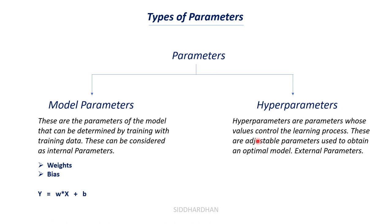Hyperparameters are parameters whose values control the learning process. These are adjustable parameters used to obtain an optimal model, and we can consider them as external parameters. While discussing model parameters, we start with random weight and bias values and work our way to reach optimized parameter values. How this change happens is determined by hyperparameters — they control the learning process.